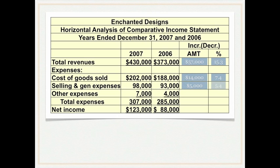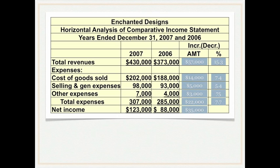Selling and general expenses changed by $5,000, giving a percent change of 5.4%. Other expenses had an amount of change of $3,000, which was a 75% increase. Total expenses changed by $22,000, making the percent change 7.7%. Net income increased by $35,000 for a 39.8% increase.